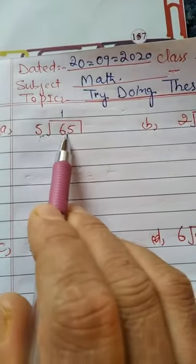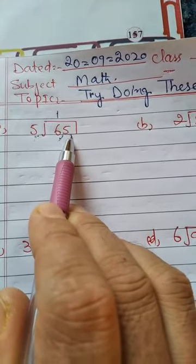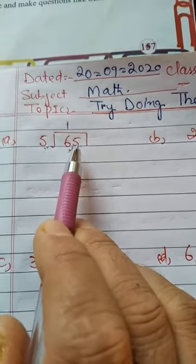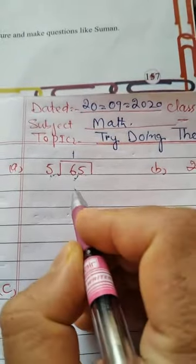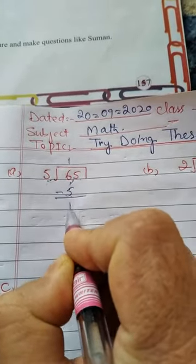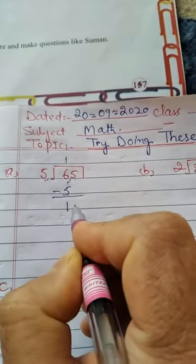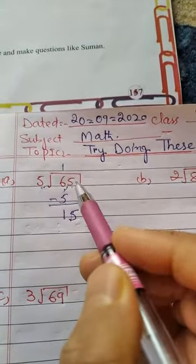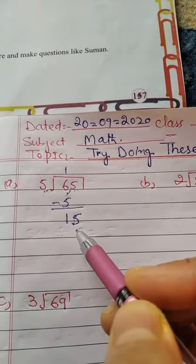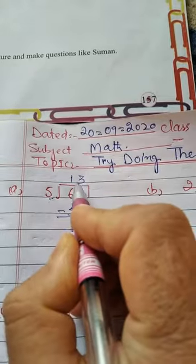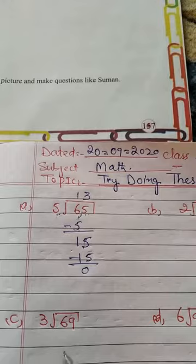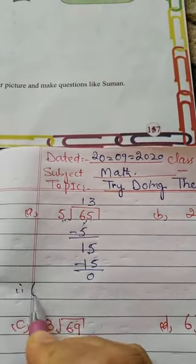5 divides 65. This method: 5 ones are 5, 6 ones are 5, this is 1. 5 into 15: 5 ones are 5, 5 twos are 10, 5 threes are 15. So the answer is 13. 65 divided by 5 equals 13.